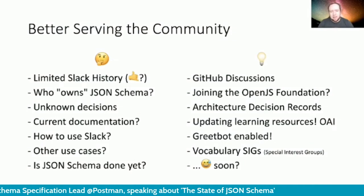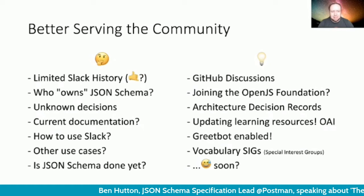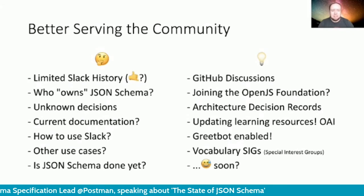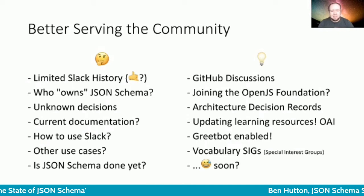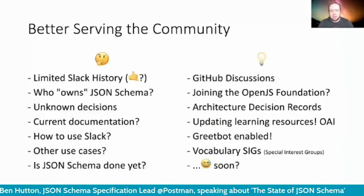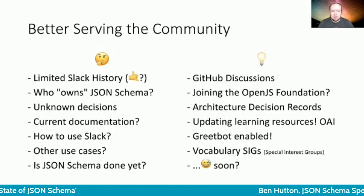Our community engagement has massively increased over the past few years. Having started a Slack server, we now boast over 2,000 members. Paying for access to older messages is not viable for us, so we're trying to use GitHub discussions to document chats and anything we want to be able to reference later. Since joining Postman, no one has directly raised concerns over JSON Schema's ownership. I'm currently proposing we join the OpenJS Foundation, which I hope can give you some assurance that Postman is not looking to own JSON Schema. I see no reason why people would object to joining OpenJS.